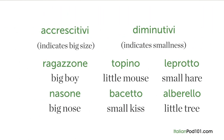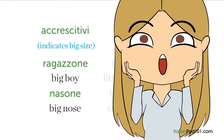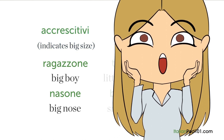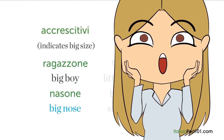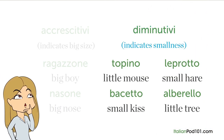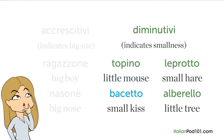To describe the aspect of something, you can use 'accrescitivi' and 'diminutivi.' Accrescitivi indicate a big size — the most common suffix is -one: 'ragazzone' — big boy; 'nasone' — big nose. Diminutivi indicate smallness — common suffixes are -ino, -etto, -otto, -ello: 'topino' — little mouse; 'bacetto' — small kiss; 'leprotto' — small hare; 'alberello' — little tree.